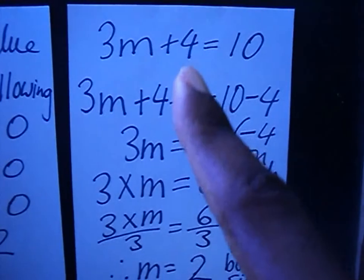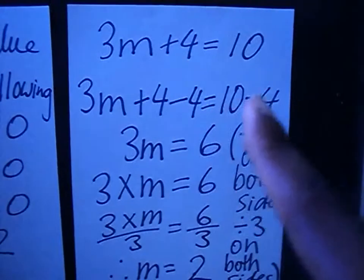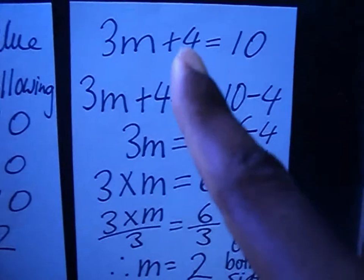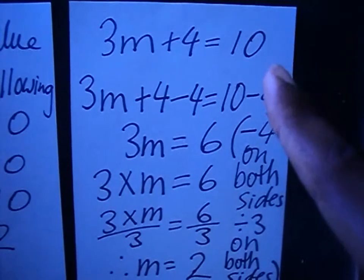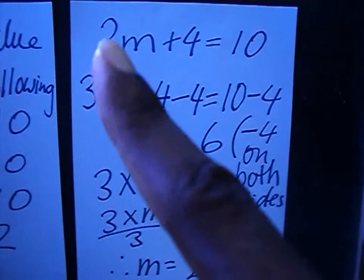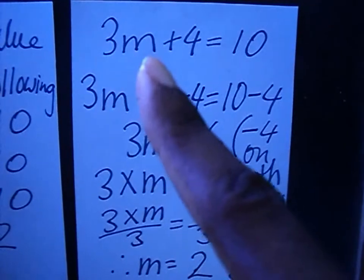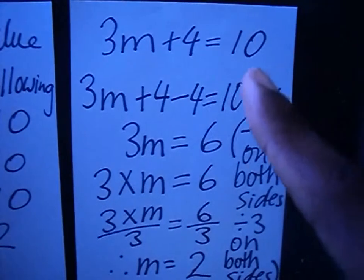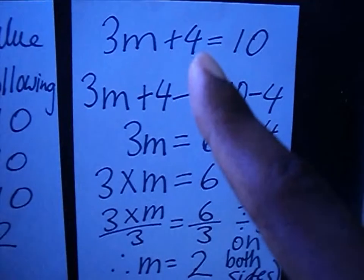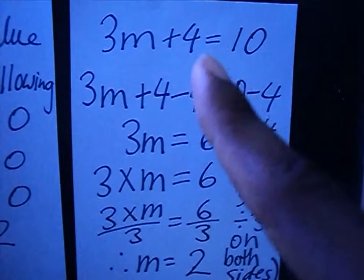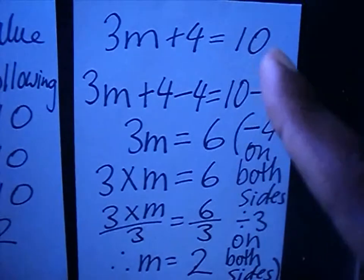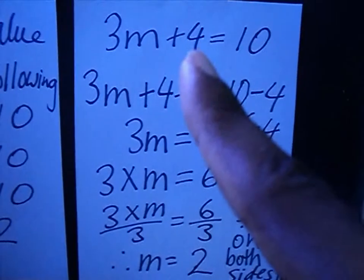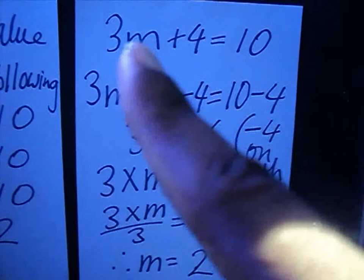You can do two things: you can shift the 4 to that side — it becomes minus when you shift it. So it will be 3m equals to 10 minus 4. Or you subtract 4 on both sides — subtract 4 on both sides.